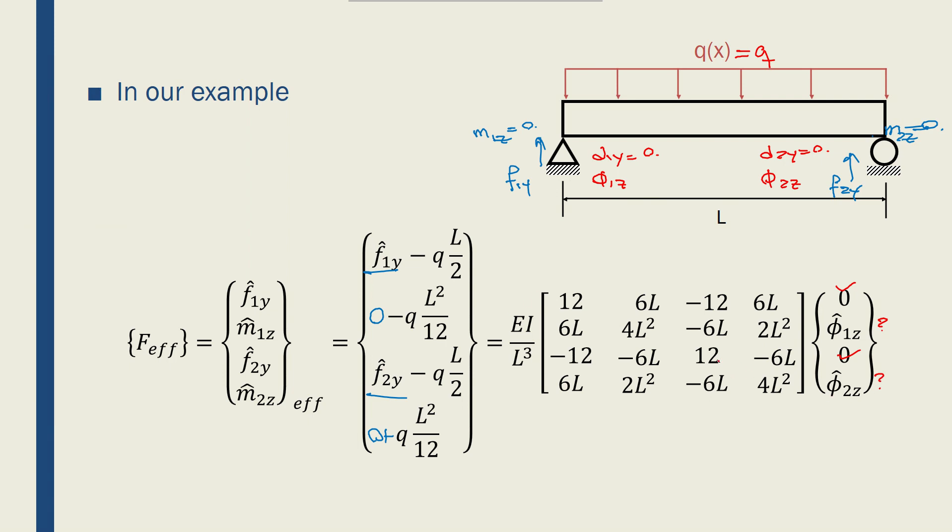I have a system of four equations and four unknowns. I have this unknown and this and the two phi's.